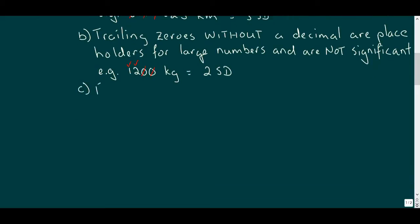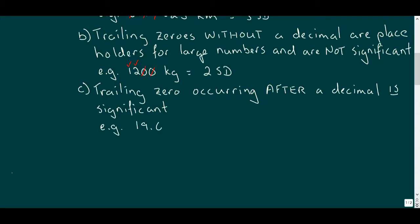If a trailing zero occurs after a decimal place, it is deemed significant because it provides no information about the value unless it speaks to the precision of the measurement. For this case, we'll consider a measurement of 19.0 seconds, in which the 1 and the 9 are significant, but the 0 is also significant because we wouldn't write it unless we were certain of or could estimate its value. So this measurement has three sig digs.